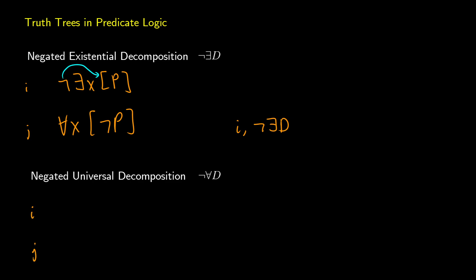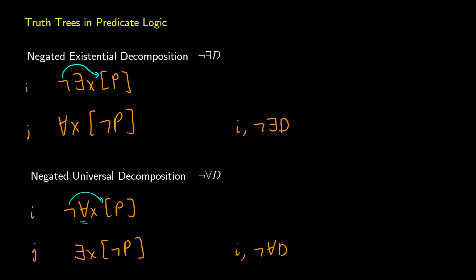For negated universal decomposition, if on line i we have 'not for all x, p', we can do the same thing: push the negation through to p and flip the quantifier. This gives us 'exists x such that not p' on line j — from line i, not-universal decomposition. In terms of meaning: if there's no such thing that is p, then everything has to be not p; and if not everything is p, there must be something out there that is not p. These two rules are just mechanical — we push the negation through.